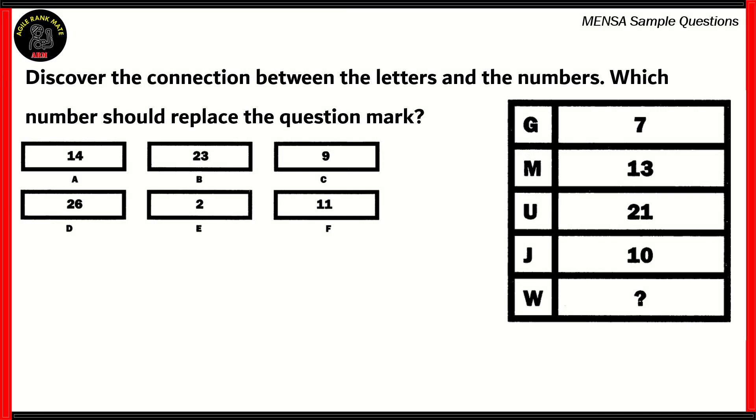Now, let's look at the final question for the day. Discover the connection between the letters and the numbers. Which number should replace the question mark? So you have G giving us 7, M written as 13, U written as 21, J written as 10. What would be W's number? You have 14, 23, 9, 26, 2, and 11. Now, usually when it comes to letters and numbers, in most scenarios, we find that the number that's usually given has to do with its position on the alphabet.